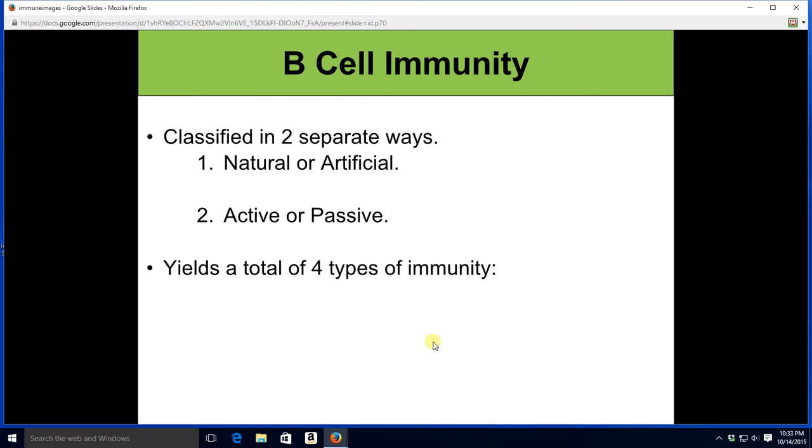And there's actually a couple different ways we can qualify immunity. There's natural versus artificial. Then there's active versus passive. So we get a total of four types. Natural active. Natural passive. Artificial active. Artificial passive.